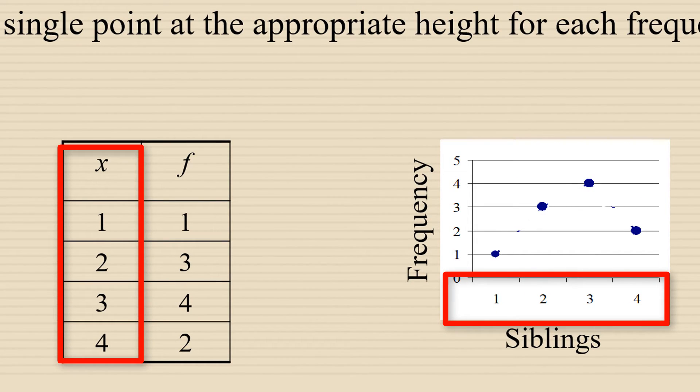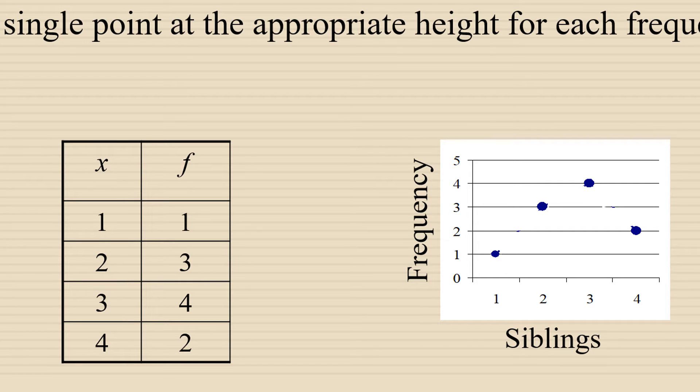The data values go along the horizontal axis: 1, 2, 3, and 4. You see those in the column labeled X. X always represents data values.